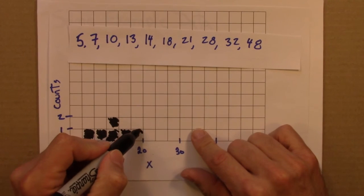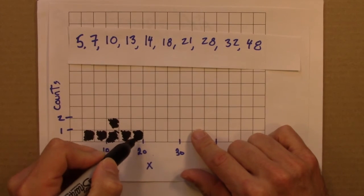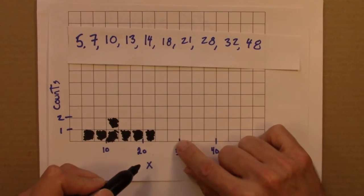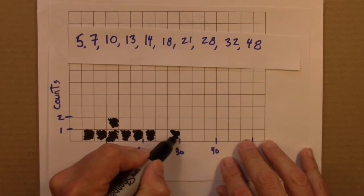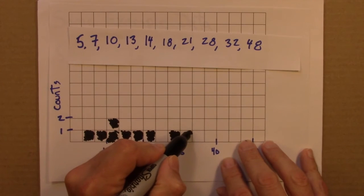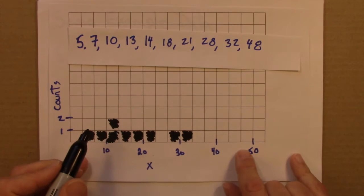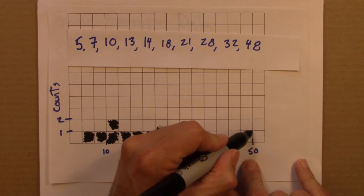14, 18 is in there, 21 is a little to the right of 20, 28, 32, and 48 goes all the way over here.